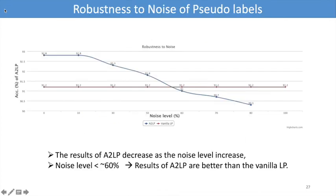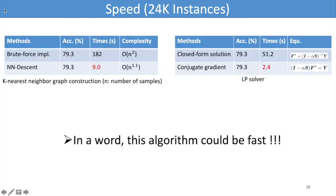Thirdly, the results of ALP are quite robust to the noise of pseudo-labels. The results of ALP improve over the side of LP consistently when the noise level is less than 60%. Finally, the algorithm could be fast.